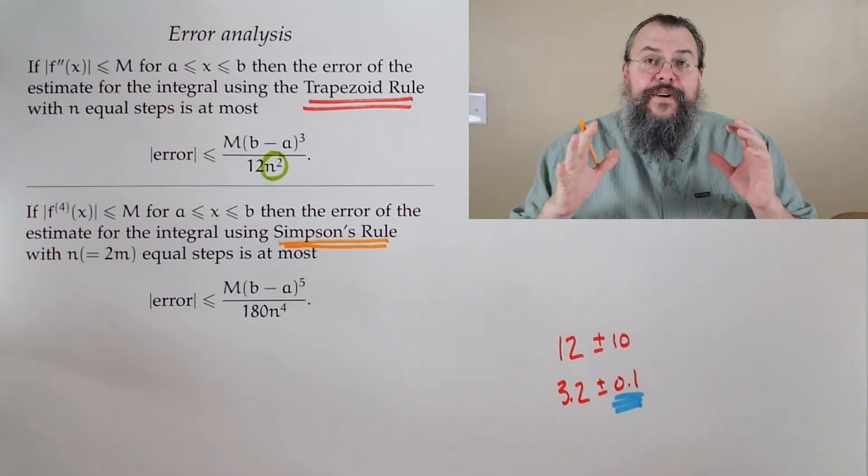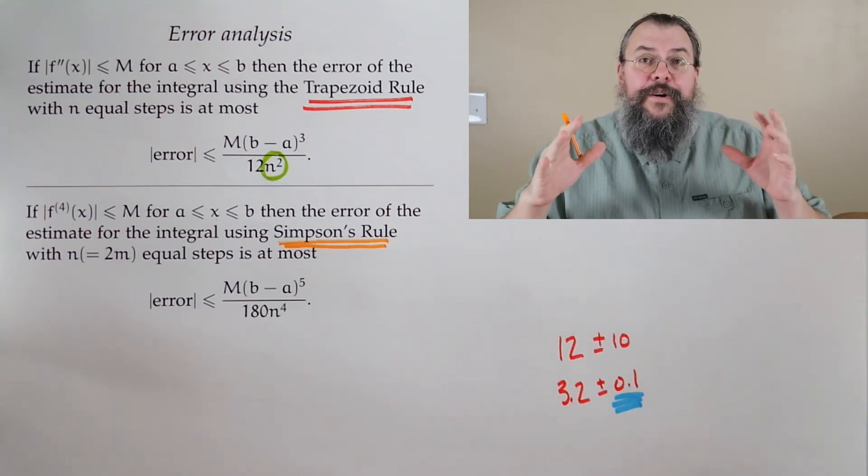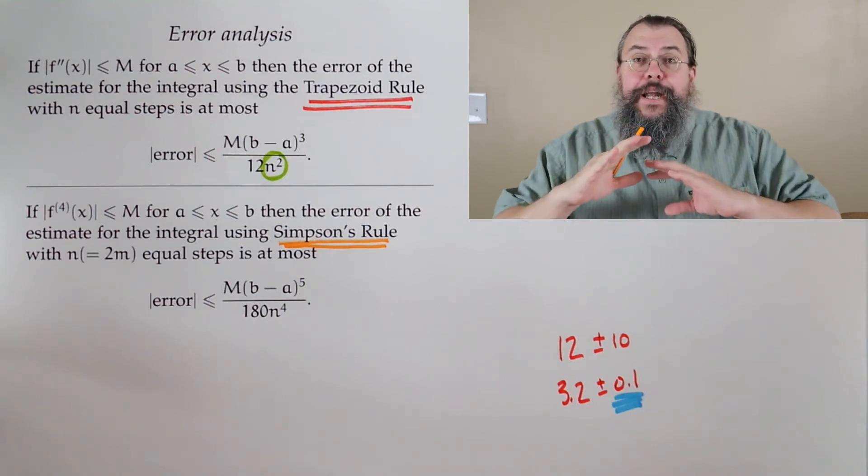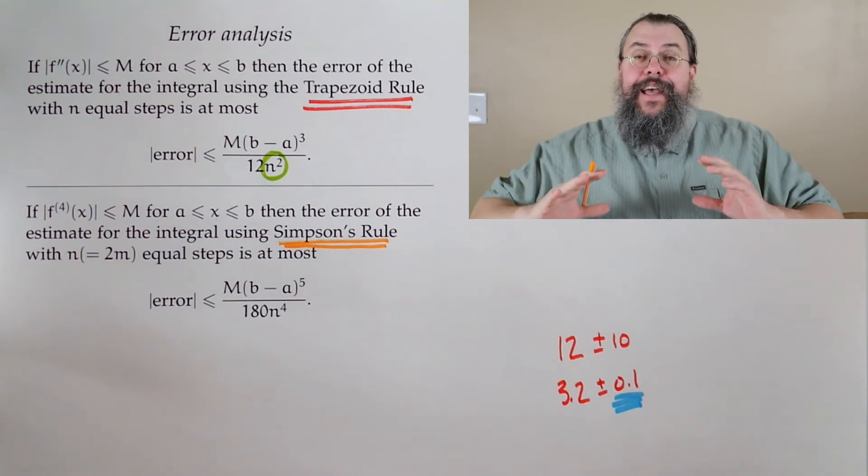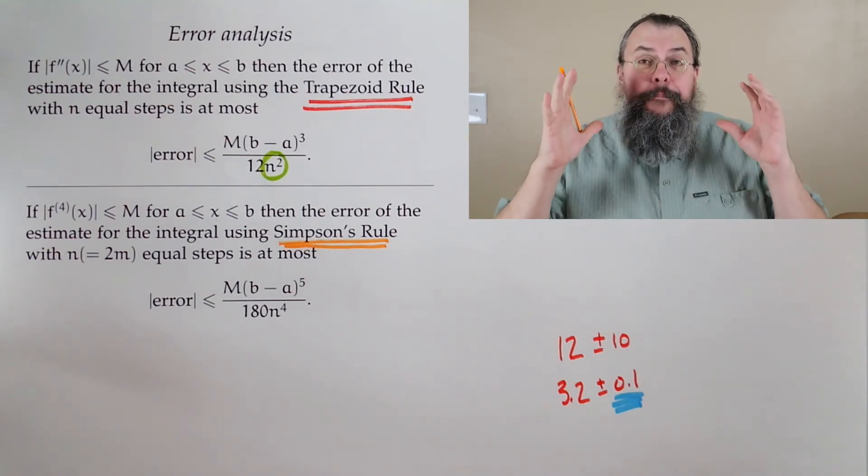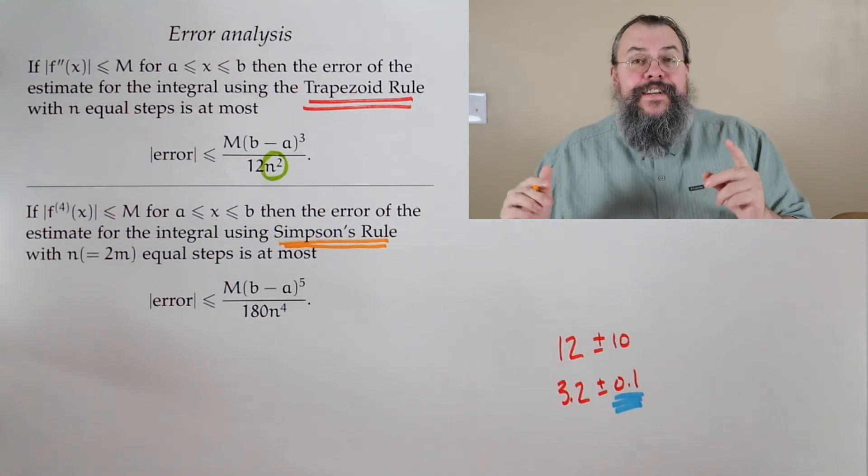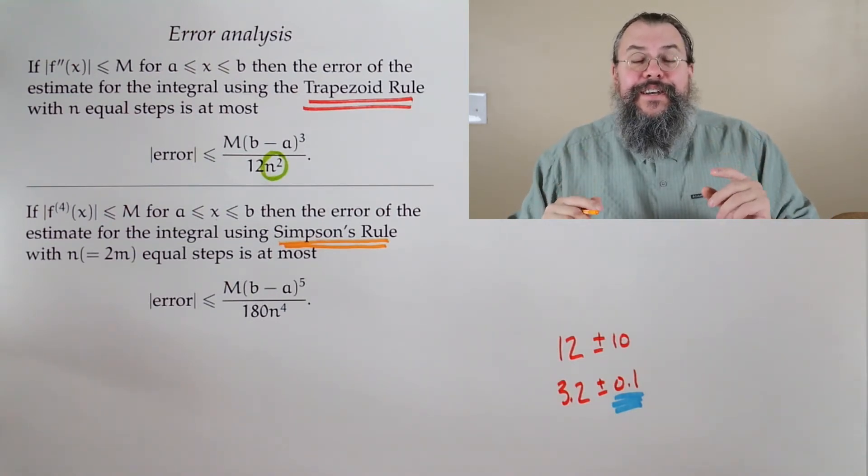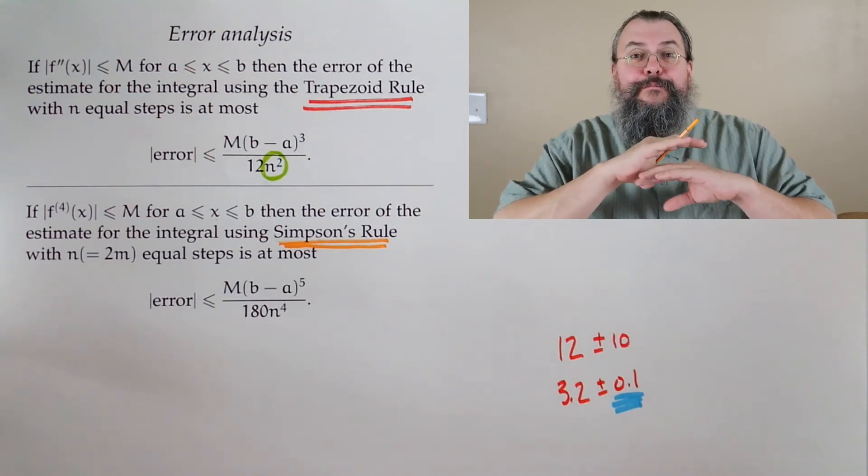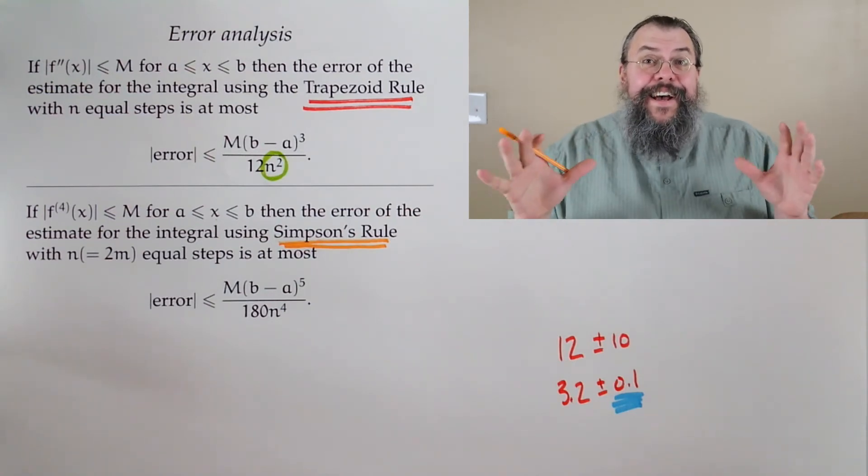Because Simpson's rule is based off of parabolas. So you would say, okay, so anything past a parabola, we're not great at. But it's a beautiful fact, Simpson's rule is actually really good at cubics. It's amazingly good at cubics. In fact, Simpson's rule is so good at cubics, if you have a cubic, you capture the area perfectly. That's how good it is.